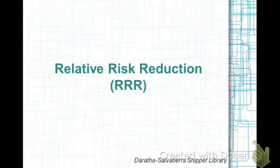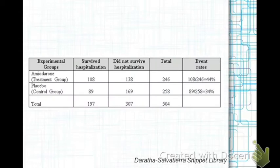Consider the example of patients randomized to a group receiving the antiarrhythmic drug amiodarone and another group receiving a placebo. To calculate RRR, you need to first calculate the absolute risk reduction, or ARR.